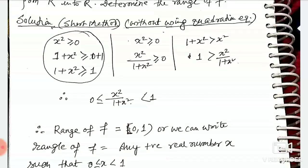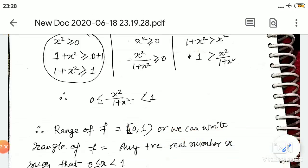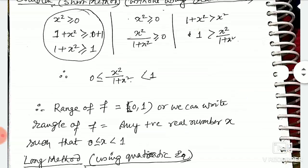but less than 1. So, we can write range of f is [0, 1). Or, we can write range of f equals to any positive real number x such that x is greater than or equal to 0, less than 1.